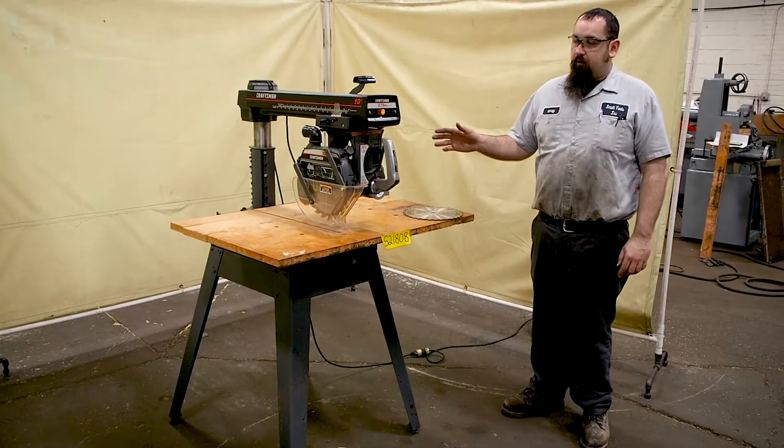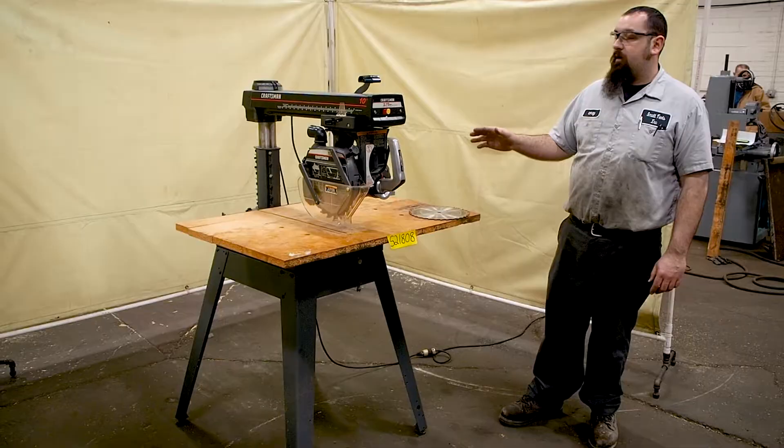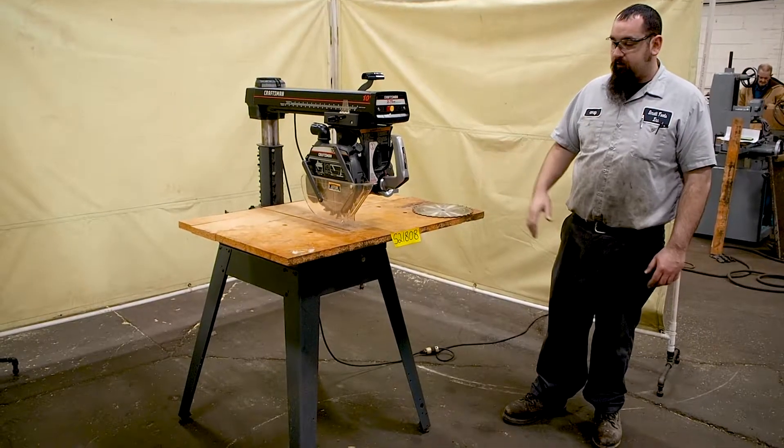Here we have a 10-inch Craftsman Radial Arm Saw. This unit is 2 and 3 quarter horsepower. It is currently wired 110 volt and can only be wired 110 volt.